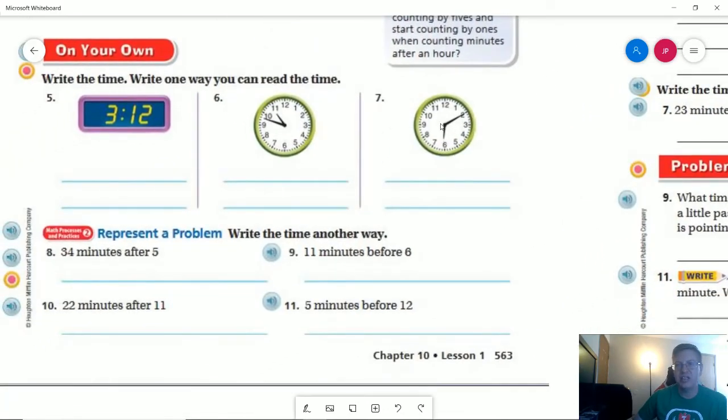Number 7, our hour hand is just a little bit past the 6 which means we are between 6 and 7 o'clock. We can count by 5, 5, 10 and it looks like it's on the 2 here so that would be 6:10 and we could say 10 minutes after 6.